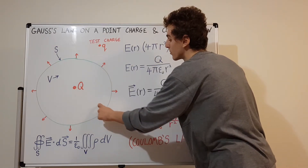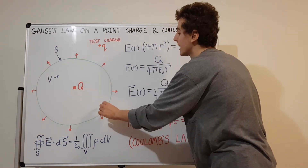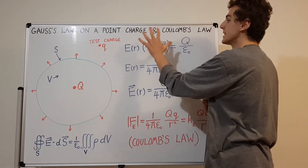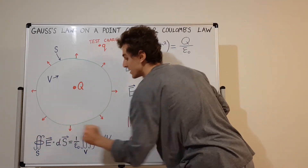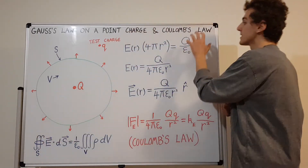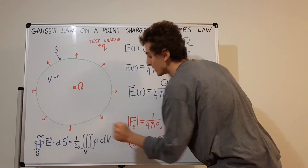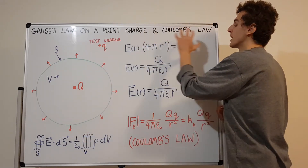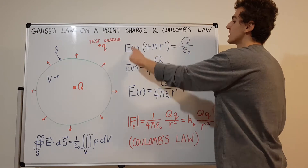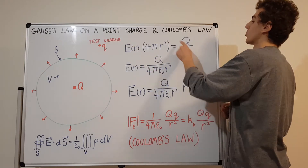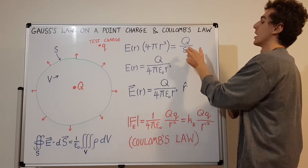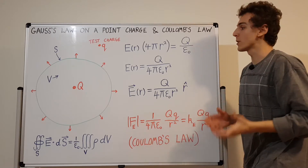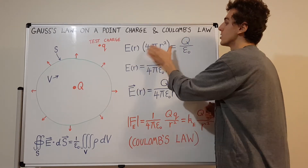So the surface integral is going to be the product of the electric field evaluated at r multiplied by the surface area of the sphere, which is 4πr². So 4πr² is the surface area of any sphere with radius r. Q sits at the center, and a distance r away from Q is where the surface of the sphere is. So that's the left-hand side — the surface integral — and this is the right-hand side — the volume integral of the charge density. Now we have the equivalence: E(r) × 4πr² = Q/ε₀.